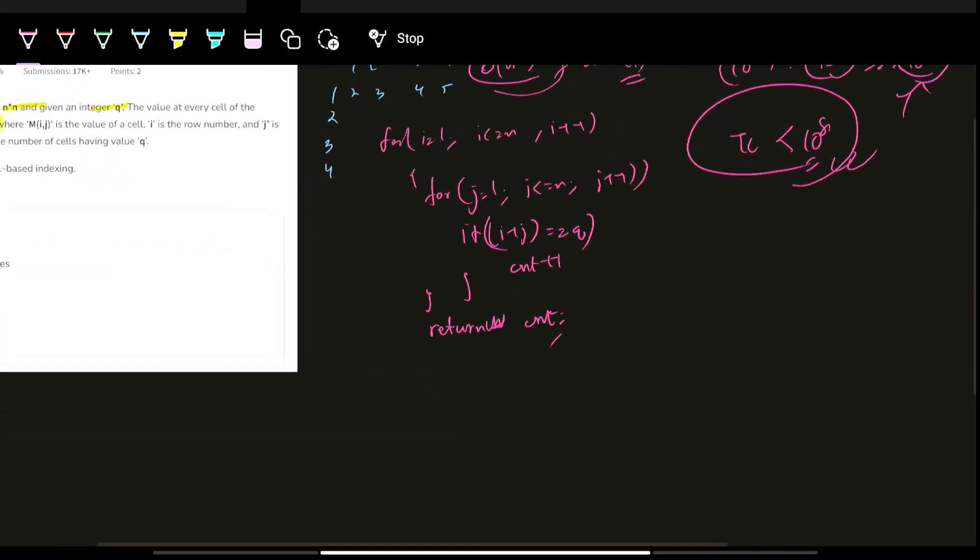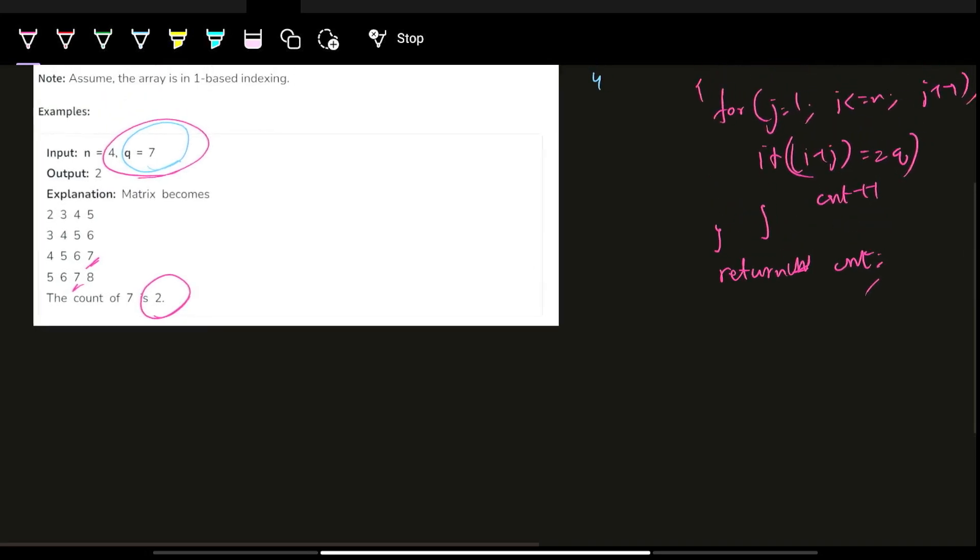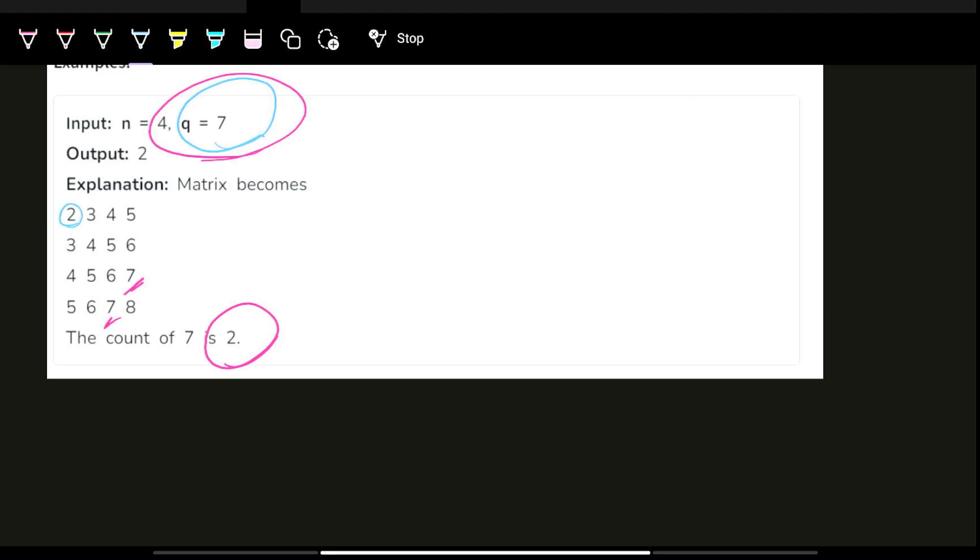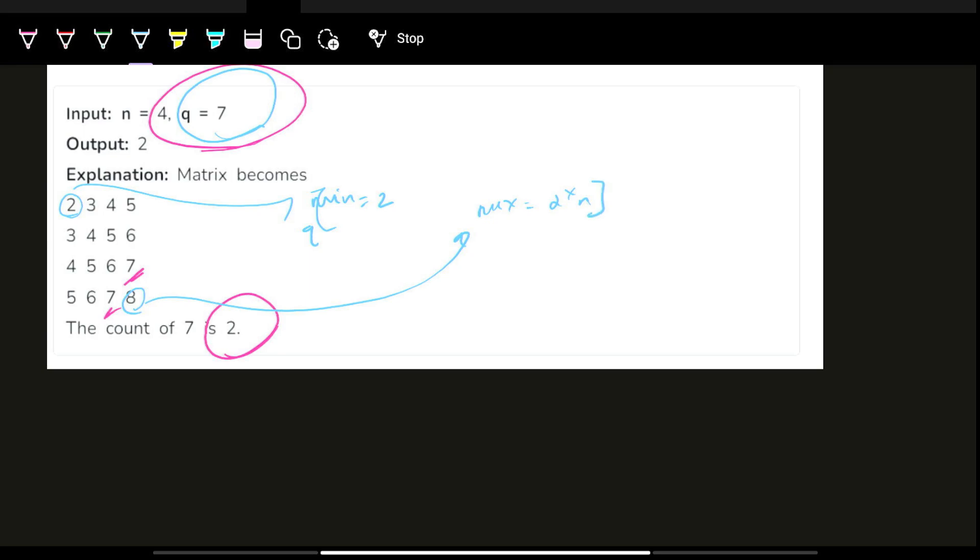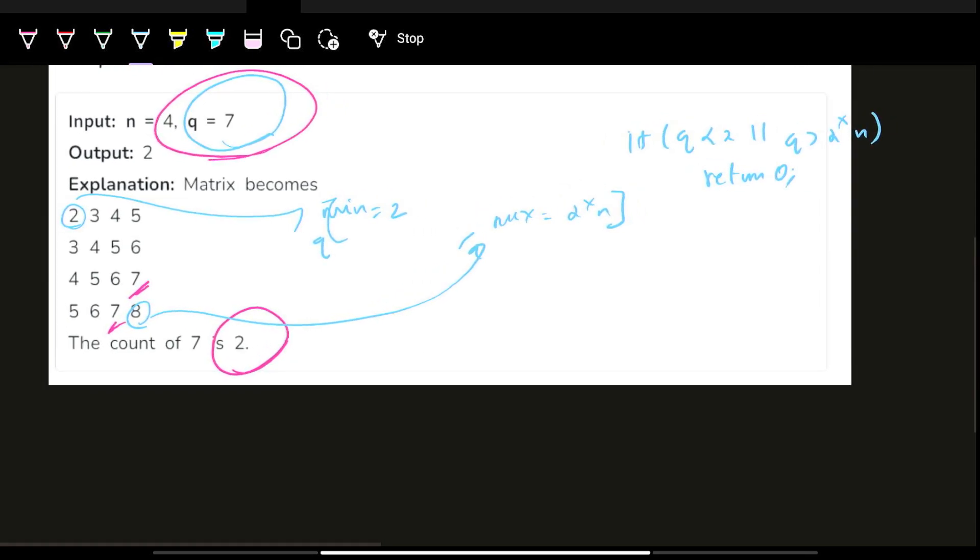So what are we going to do? We will open a little matrix here and observe what is the range of the queries we have been asked. Let us visualize this matrix. I can clearly see that this would be my minimum value and this would be my maximum value. So minimum is nothing but 2 and maximum is 2 cross n, right? So Q belongs to this range 2 to 2n. First if: if the given query is less than 2 or greater than 2 star n, then I will just return 0, right?